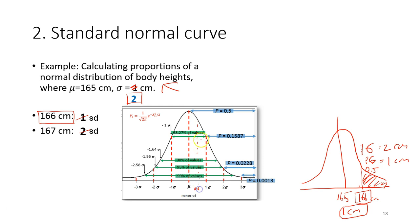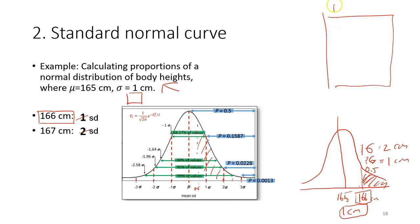With z=0.5, we refer to the standard normal table. The first part of the z-value is 0.0 and we look up 0.5 in the table to find the corresponding probability.